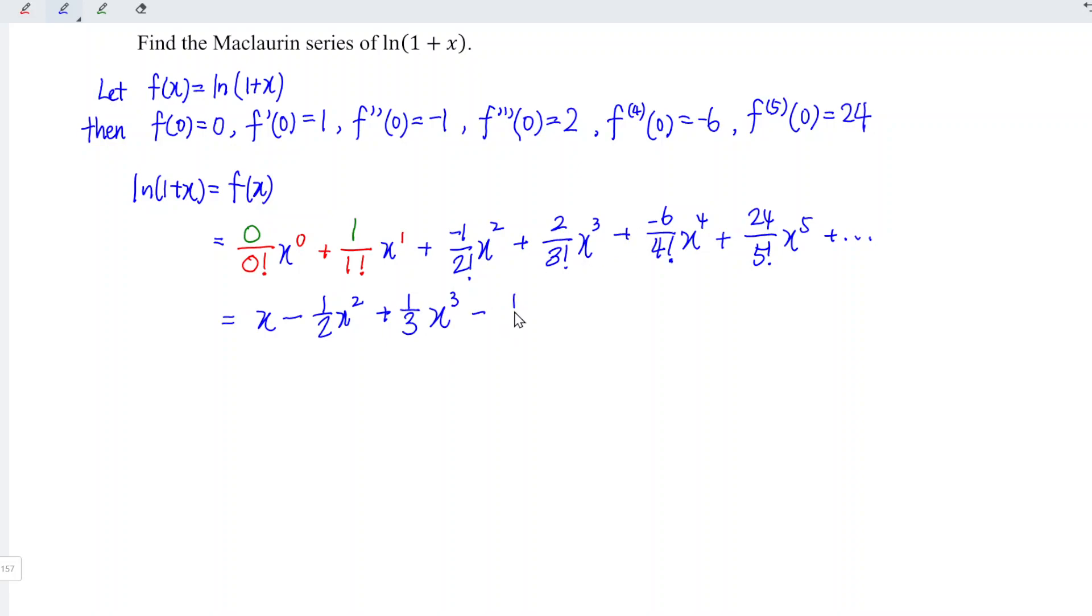And we have x to the power of 3. Next, plus, minus times minus 1 over 4 x to the power of 4 plus 1 over 5 x to the power of 5, and so on.